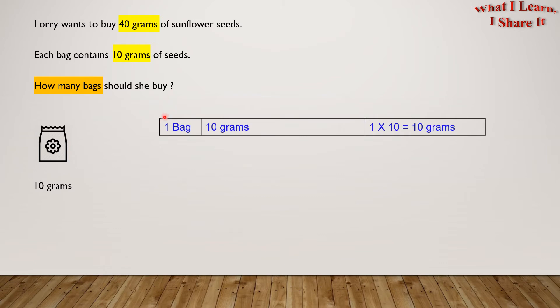What we have to do is make a table. So we have 1 bag equals 10 grams, and that also equals 1 times 10 equals 10 grams.